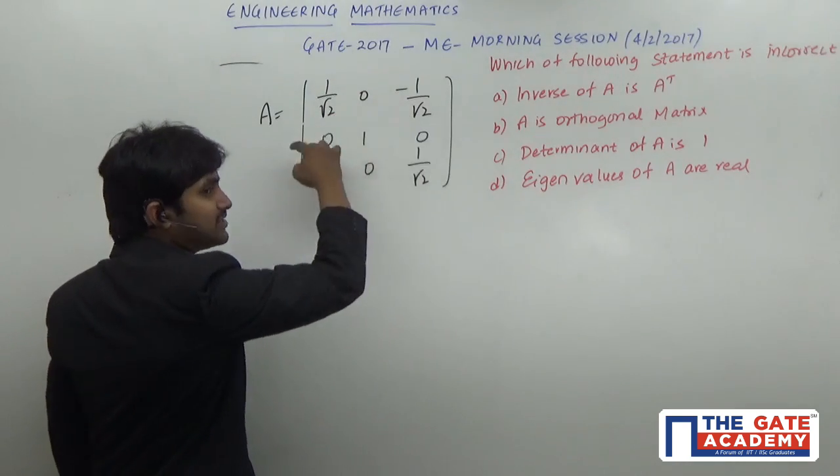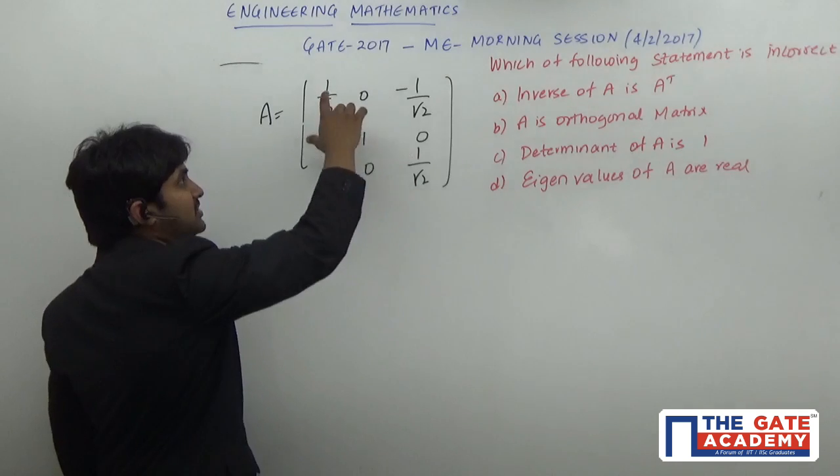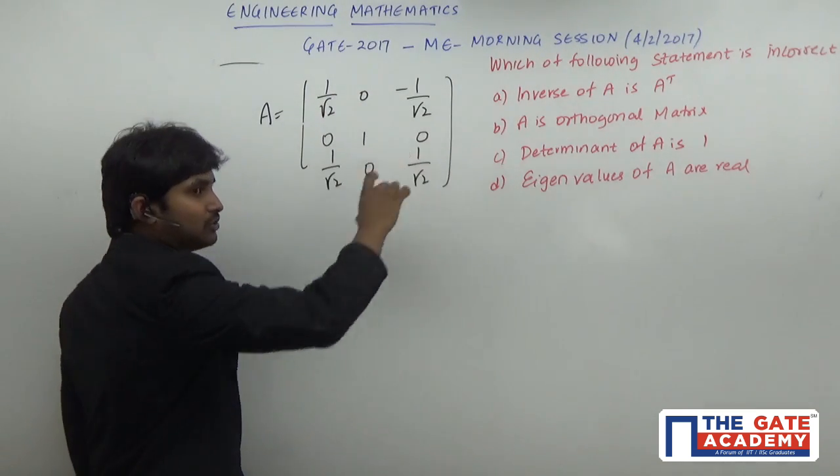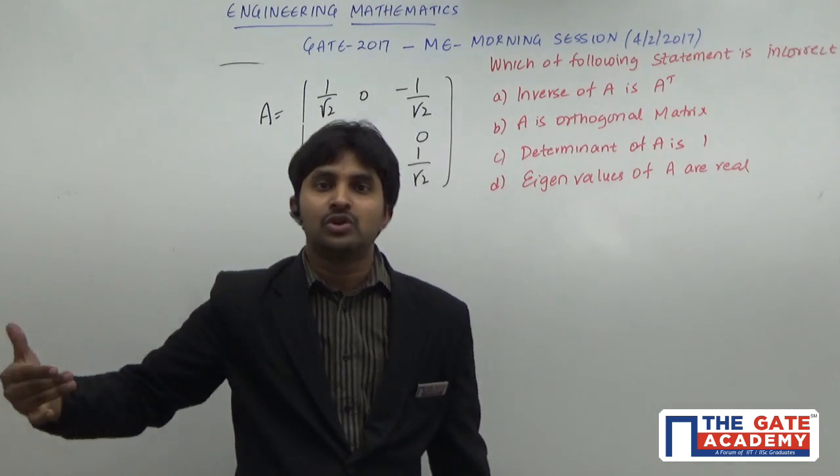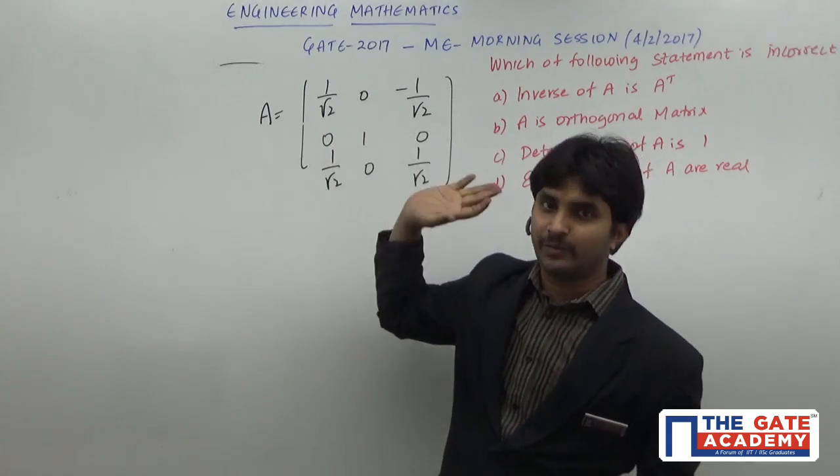For example, first row and second row: dot product equals zero. First row and third row: dot product equals zero. Second row and third row: dot product equals zero. Whenever the dot product equals zero, those vectors are called orthogonal vectors and the matrix is called an orthogonal matrix.